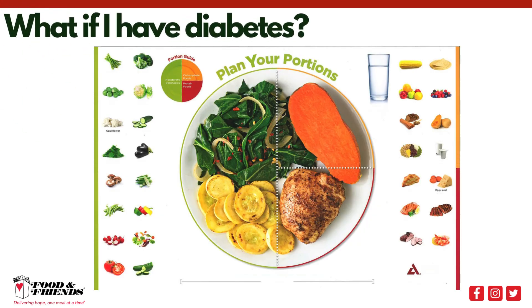To keep blood sugar levels stable, it is best to eat a consistent amount of carbohydrates with meals. One way to help is by following the plate method, a technique to better visualize and plan meals. The plate method recommends that you fill half of your plate with non-starchy vegetables, one quarter with protein, and the other quarter with carbohydrate foods. This balance is recommended for meals, snacks, and beverages.